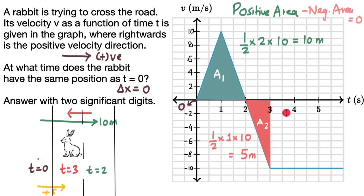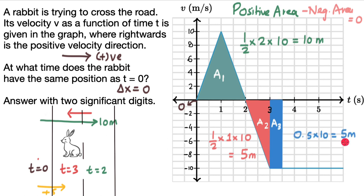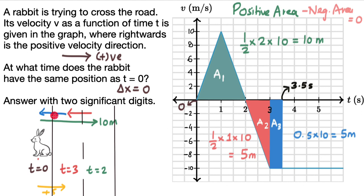If we figure that out from the graph, we can see we only have a rectangle. The area is length times breadth — one side is 10. So if the other side is 0.5, the area would be 5. The area here is 0.5 times 10, which is 5 meters. This time instant would be 3.5 seconds. The rabbit has moved some more to the left — that extra negative displacement means the net displacement is now equal to zero. This happens at time t equal to 3.5 seconds.